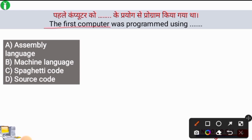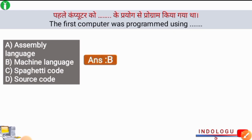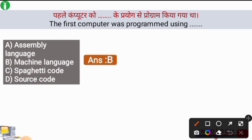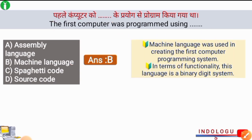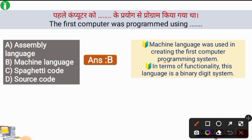Next question: The first computer was programmed using which language? The right answer is option B, machine language. Machine language was used in creating the first computer programming system. In terms of functionality, this language is a binary digit system.